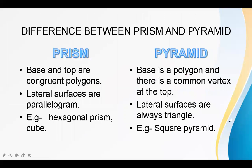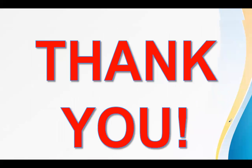The difference between prisms and pyramids: in a prism, the base and top are congruent polygons, and the lateral surfaces are parallelograms — for example, hexagonal prism; a cube is also a prism. In a pyramid, there is a polygonal base and a common vertex at the top where all lateral faces meet, and the lateral surfaces are always triangular — for example, square pyramid and triangular pyramid. Thank you.